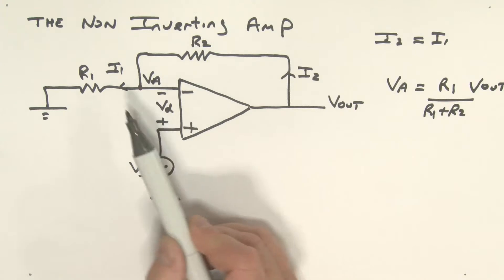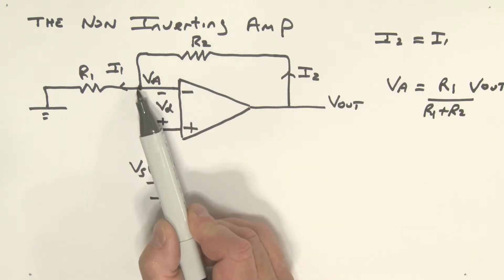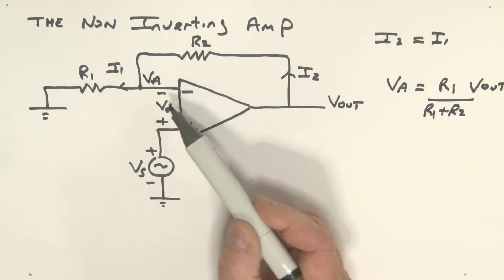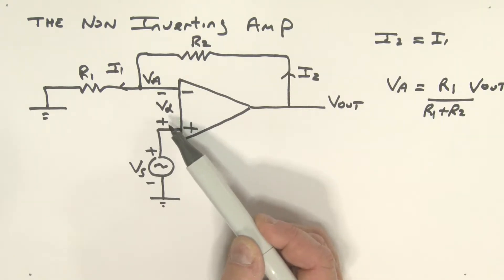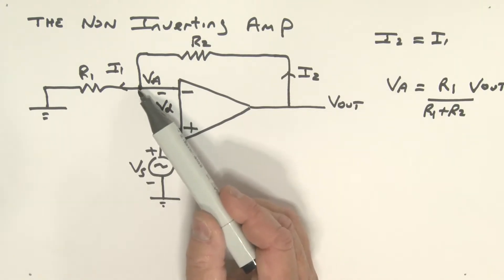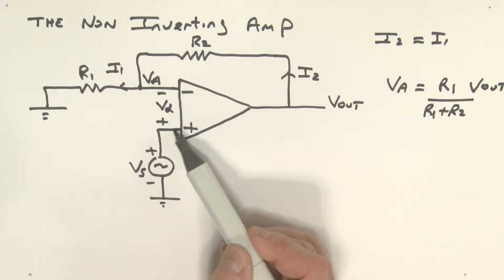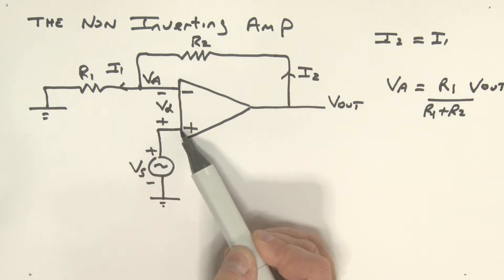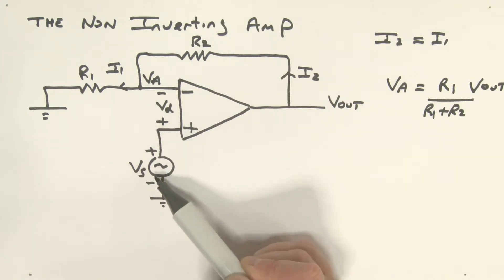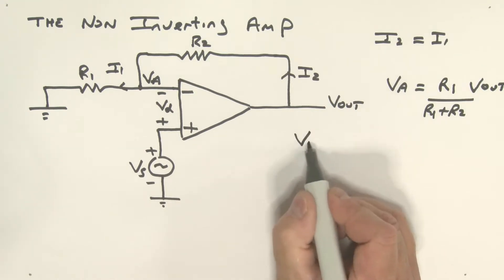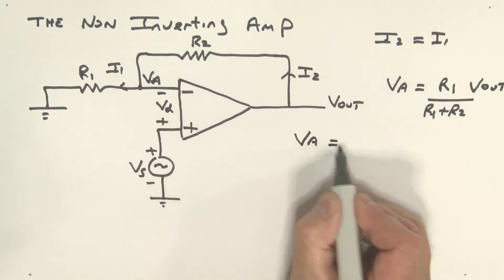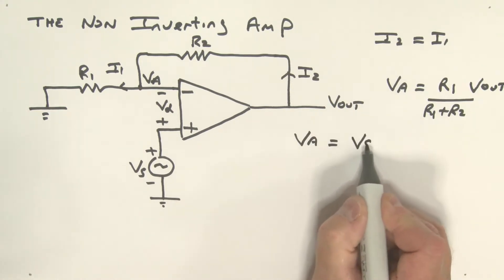We've already said that voltage Vd is very, very small — effectively zero. Therefore VA is really equal to the voltage at the non-inverting input, which is Vs. So VA equals Vs.